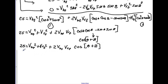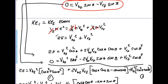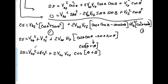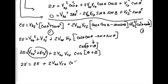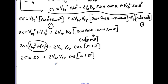However, from the kinetic energy equation we know that v_blue_final squared plus v_red_final squared equals 25. Substituting that in: 25 equals 25 plus 2 times v_blue_final times v_red_final times cosine(theta plus beta). Subtracting 25 from both sides: 0 equals 2 times v_blue_final times v_red_final times cosine(theta plus beta).